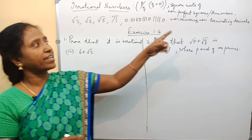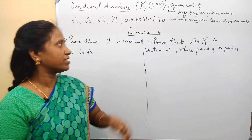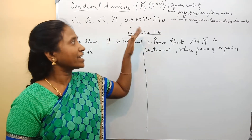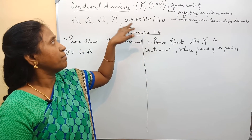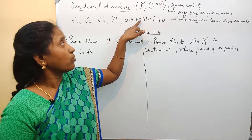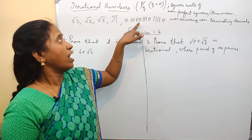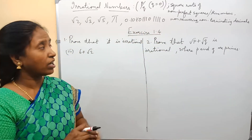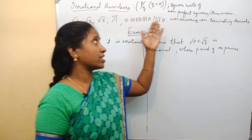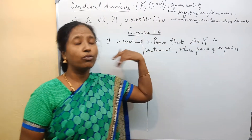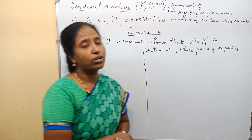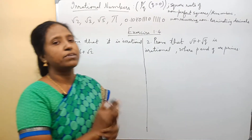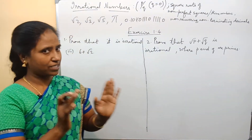And non-recurring, non-terminating decimals. For example, this one — it is neither recurring. Recurring means repeating. The pattern here shows 1, 0, then 1, 1, 0, then triple 1, 0, then 1, 1, 1, 1, 0 — there is no repetition. And there is no termination; it keeps going on. The remainder is not going to come as 0. Such numbers are called irrational numbers.